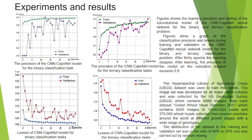Figures show the learning precision and testing of the convolutional CNN-CapsNet neural network for both the binary and ternary classification problems. After 30 epochs the learning is stopped. After learning, the precision of the model on the validation dataset exceeds 0.99. For training, a dataset with a description shown on this slide is used. The distribution of the dataset into training and validation sets was in the ratio 90% to 10% and was carried out by random sampling.